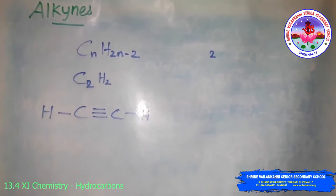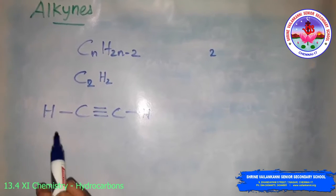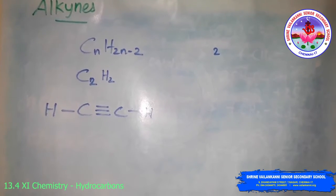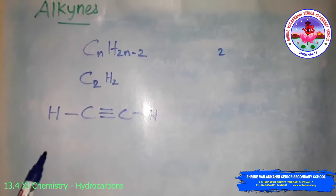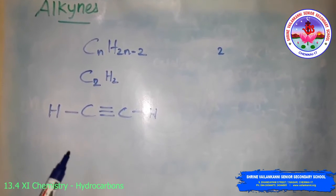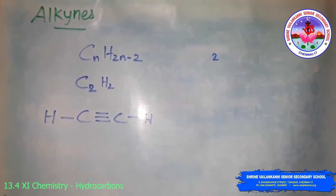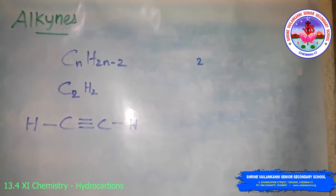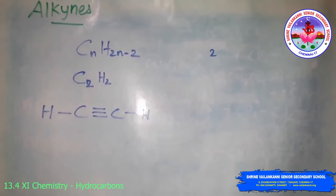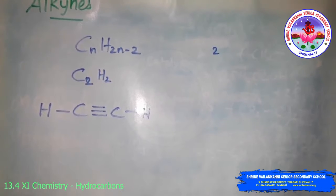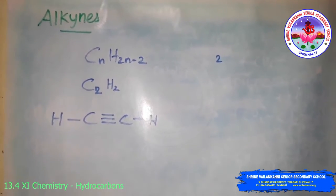This is the first stable member of the alkyne series. Acetylene is used for arc welding purposes in the form of the oxyacetylene flame, obtained by mixing acetylene with oxygen gas. Alkynes are starting materials for a large number of organic compounds.